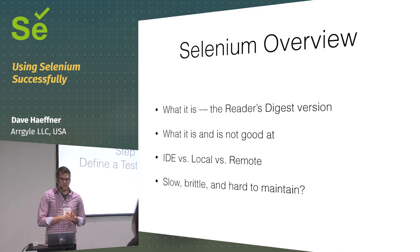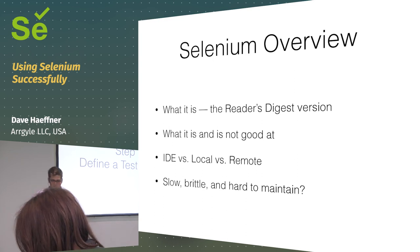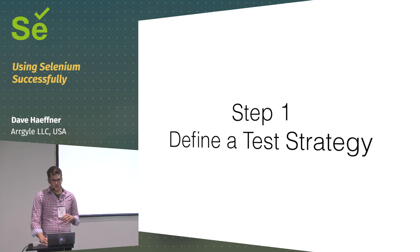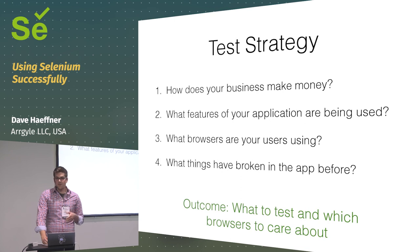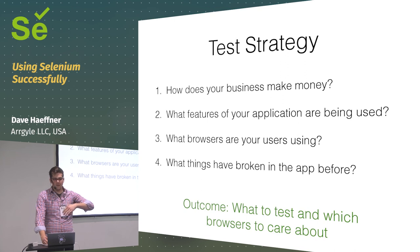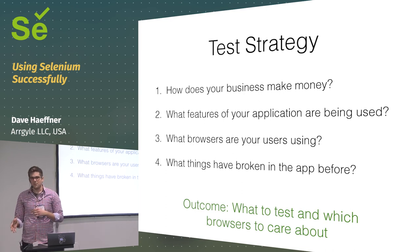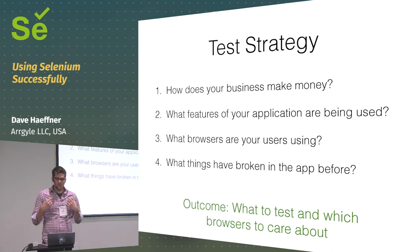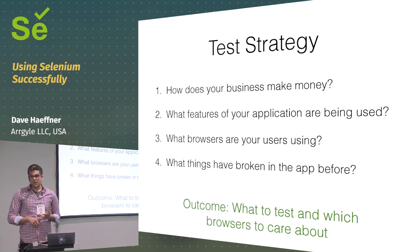Step one out of my ten-step process: I usually go into a client and ask four questions. First, how does your business make money? Second, what features are being used in your application? Third, what browsers are people using to use those features? And fourth, what things have broken before? You can look in your defect tracker, ask people who've been with the company a while, or ask what makes people nervous when you release software. The outcome is knowing what to test and which browsers to care about.